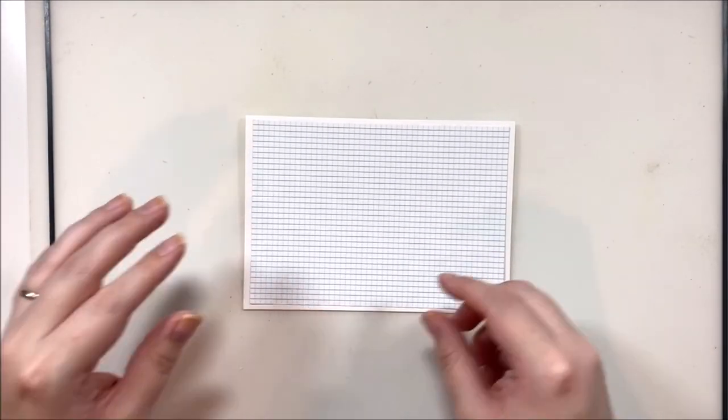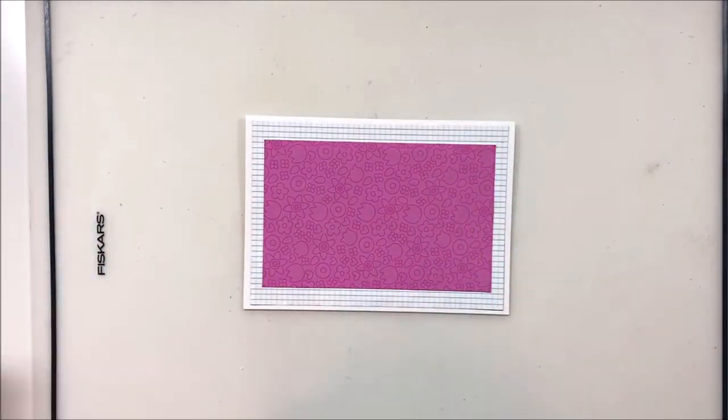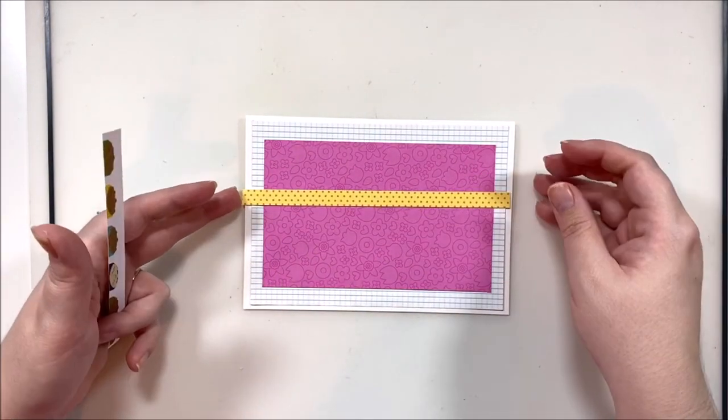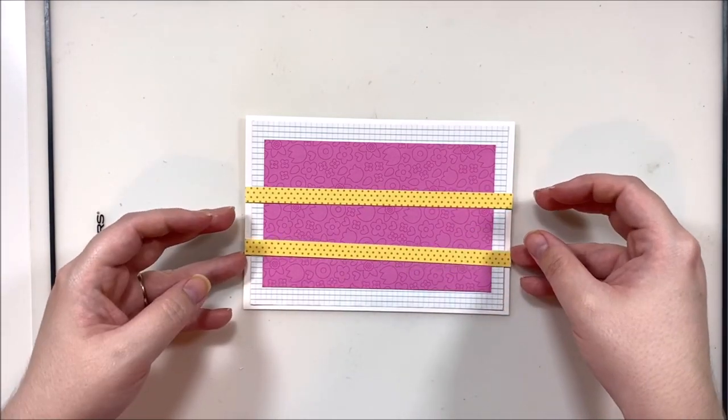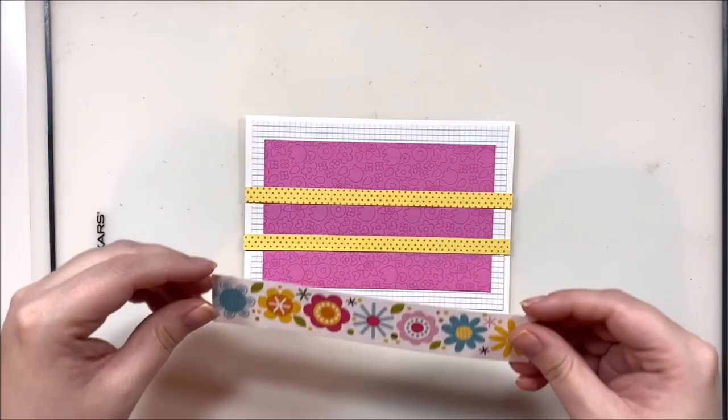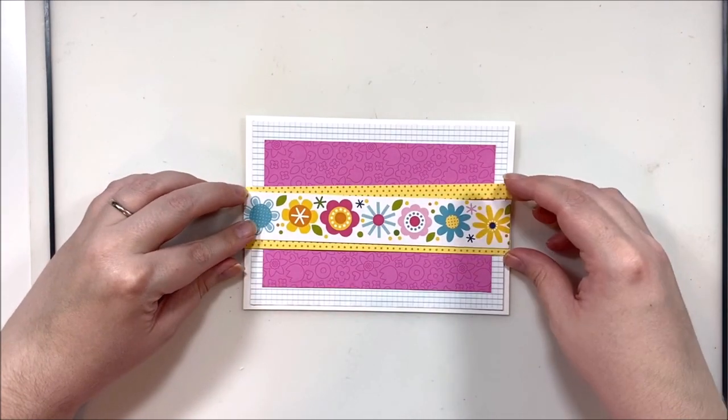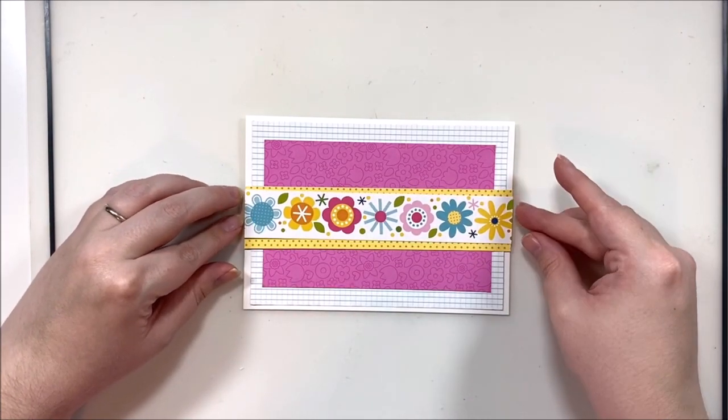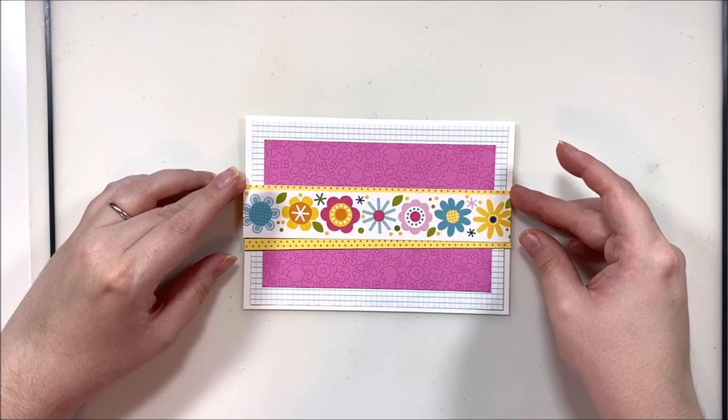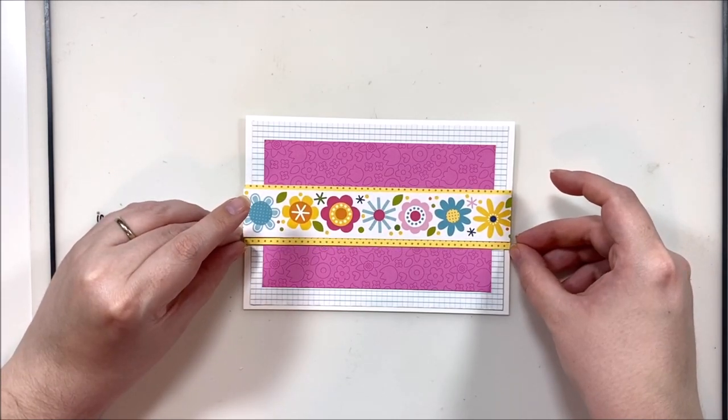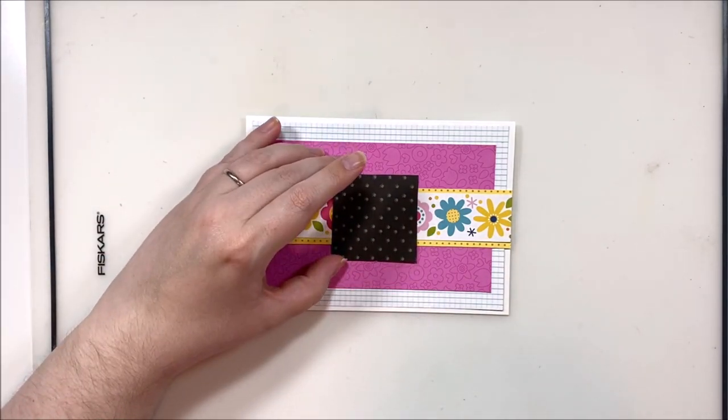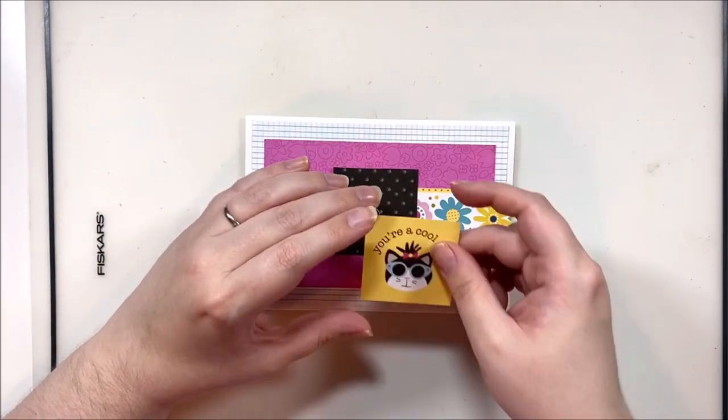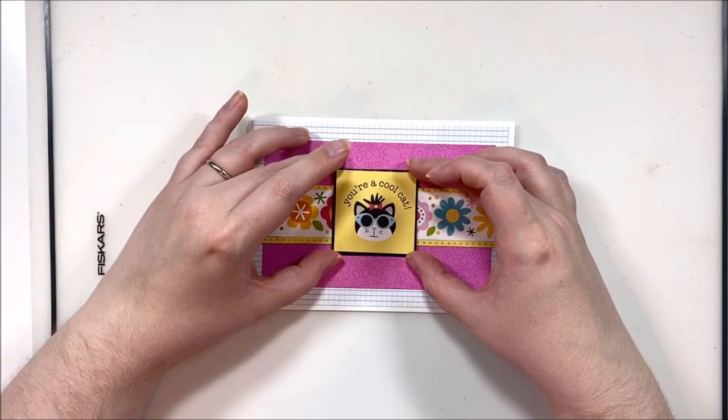On this next one we're going to do something a little bit different. This one is largely inspired by a cut apart piece that said 'you're a cool cat.' I thought there's got to be a way to use this as the focal image on the card. So I just started layering together some papers and some cut apart strips and seeing what I could make. Then I thought, let's make this the focal image and build it up around this just a little bit.